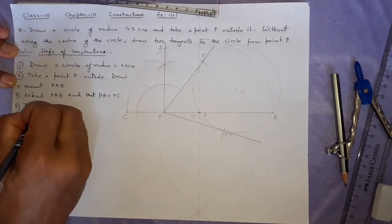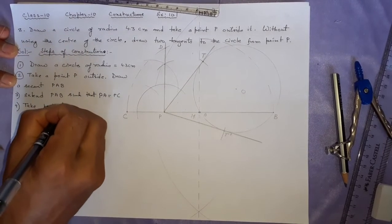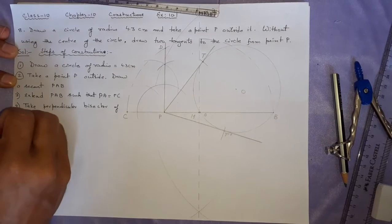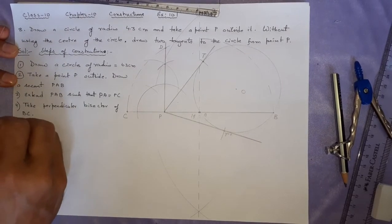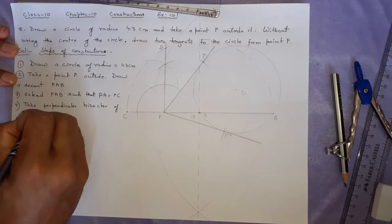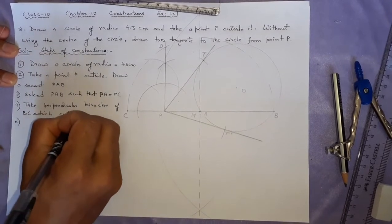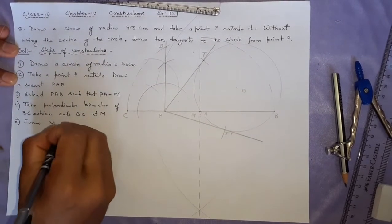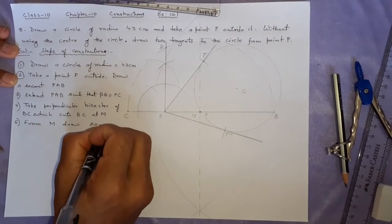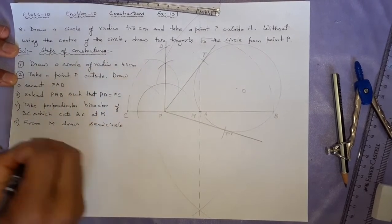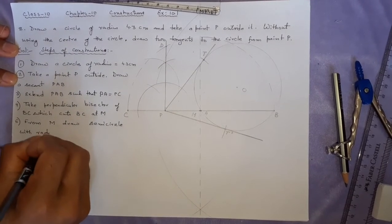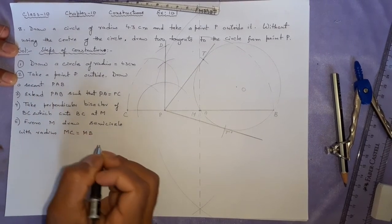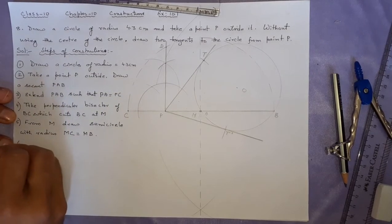After that, take perpendicular bisector of BC, which cuts BC at M. From M draw semicircle with radius MC equal to MB. Anyone you can take. This way you will be doing it next.